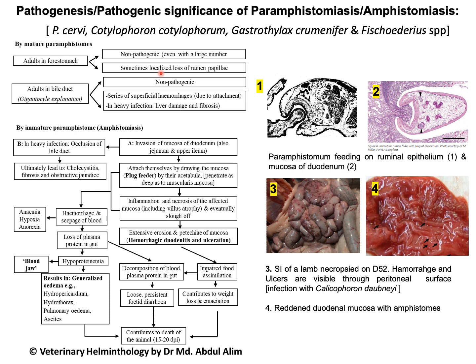Sometimes they may cause localized loss of rumen papillae in case of heavy infection. In the case of Zyganticrotylox planata, they are found in the bile duct and gallbladder, also considered non-pathogenic, but sometimes there may be superficial hemorrhage due to attachment with the mucosa, and the damage may lead to occlusion of the bile duct and sometimes damage in the liver followed by fibrosis.